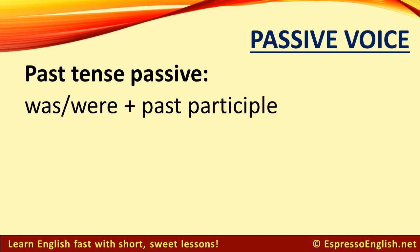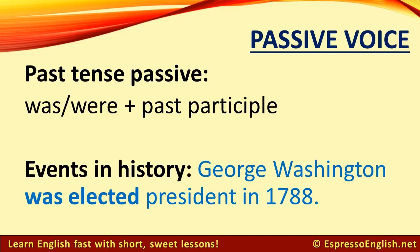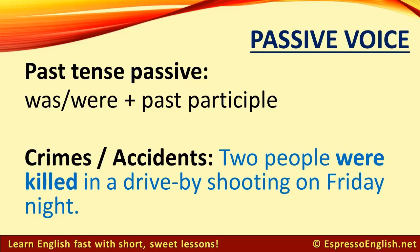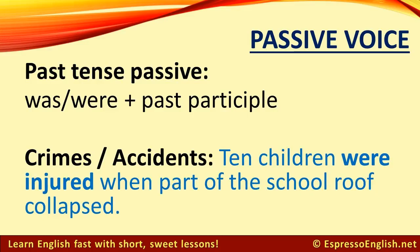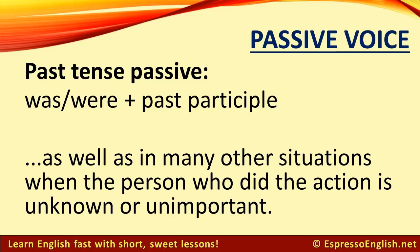To form the passive voice in the past tense, use was or were plus the past participle. We often use the passive voice in the past tense for events in history — for example, George Washington was elected president in 1788 — as well as for news events. For example, two people were killed in a drive-by shooting on Friday night. Ten children were injured when part of the school roof collapsed. And in many other situations when the person who did the action is unknown or unimportant.